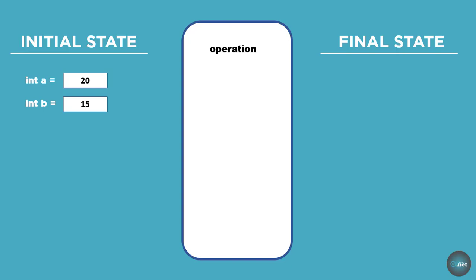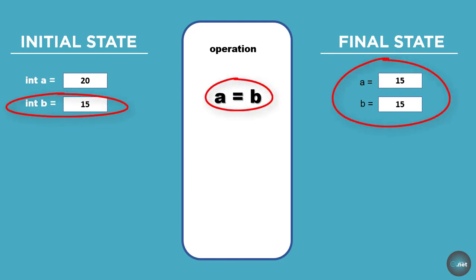If we, for example, decide to assign the value of the variable b to the variable a, this means that the value is duplicated. So the final state would be like a is equal to 15 and b is equal to 15. We call integer a value type because we see that the value is being assigned.